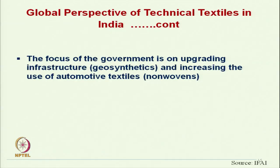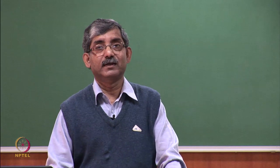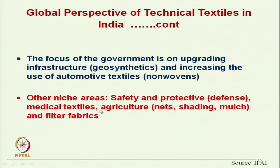Although the government is focusing on upgrading infrastructure where geosynthetics are used and increasing the use of automotive textiles where non-wovens are majorly used, government is trying hard to introduce technical textiles in India. Other niche areas are safety and protective textiles mainly used for defense personnel, medical textiles, agricultural textiles like nets and shedding, and industrial textiles basically filter fabrics. These are the areas where we have great scope in India.